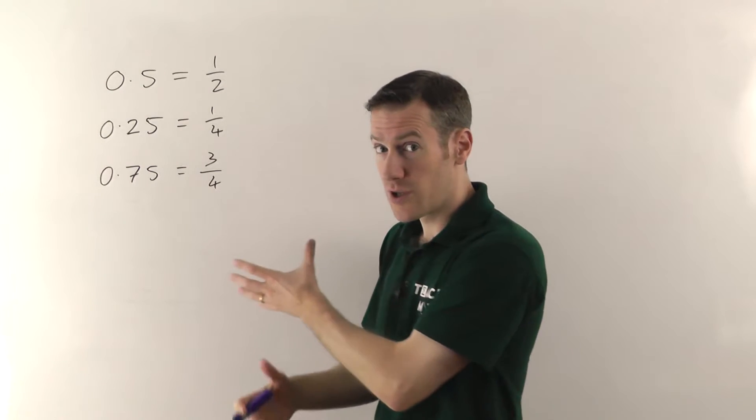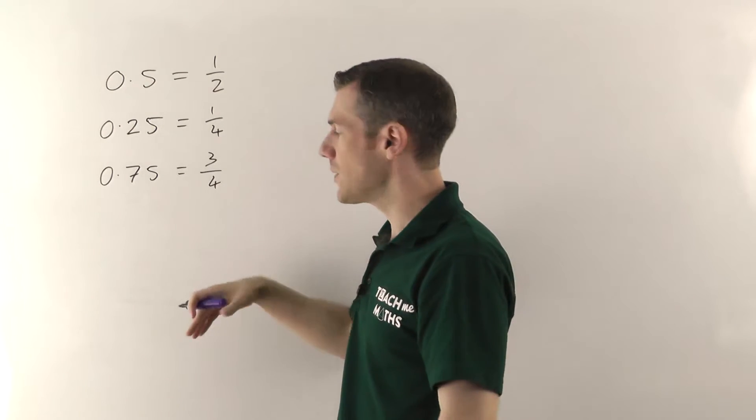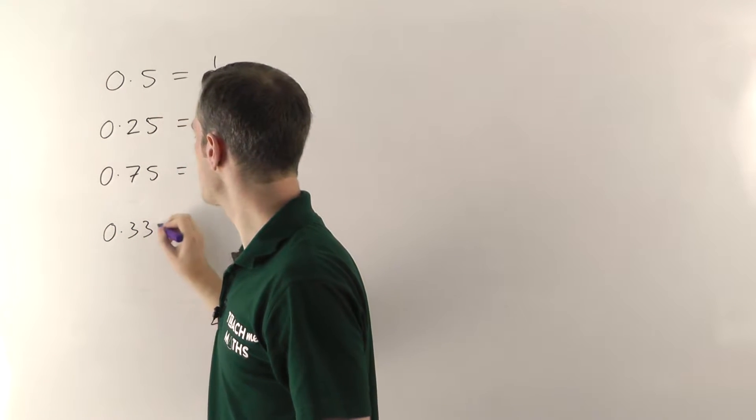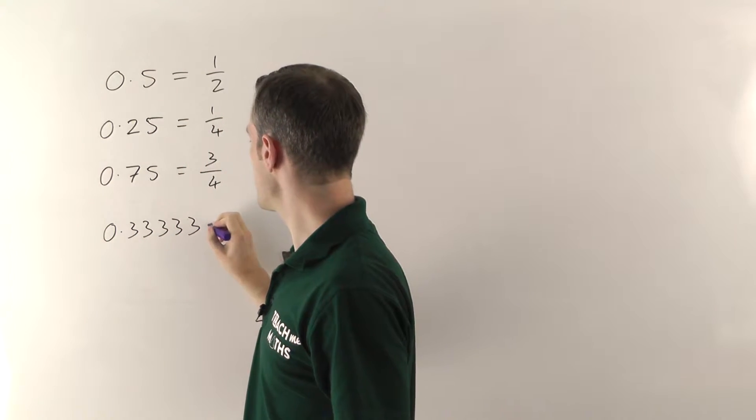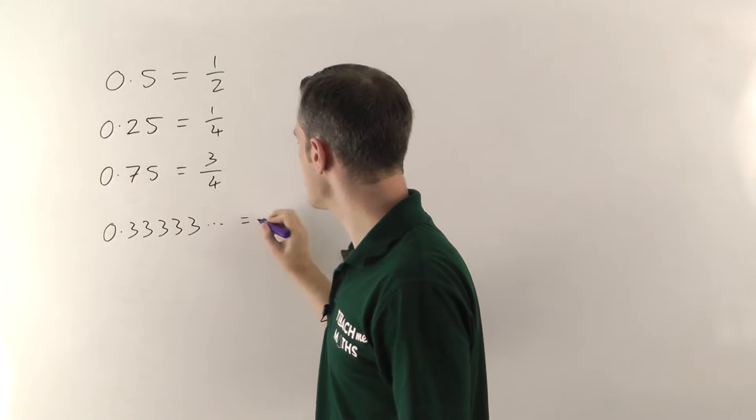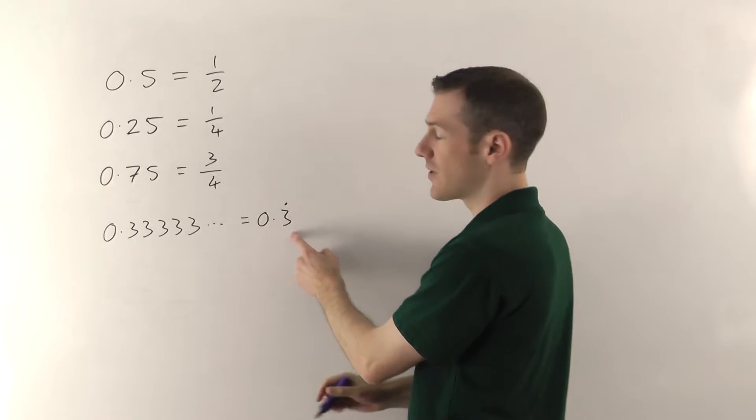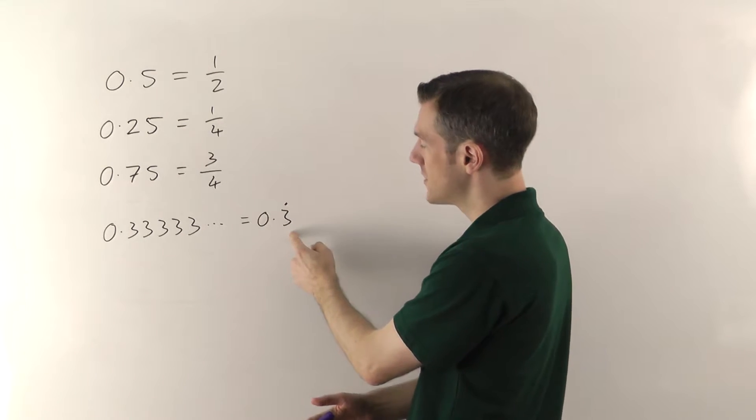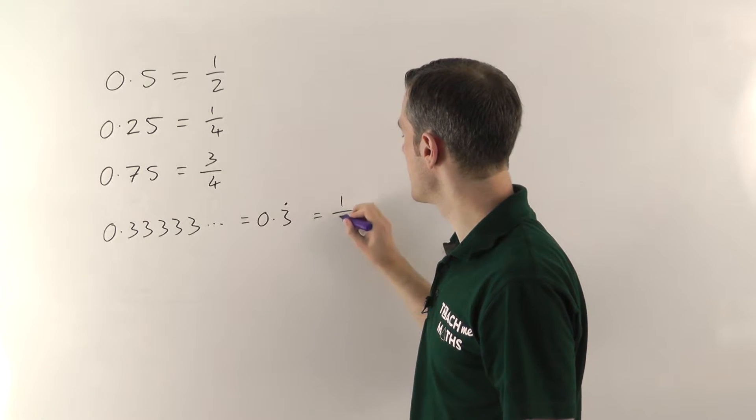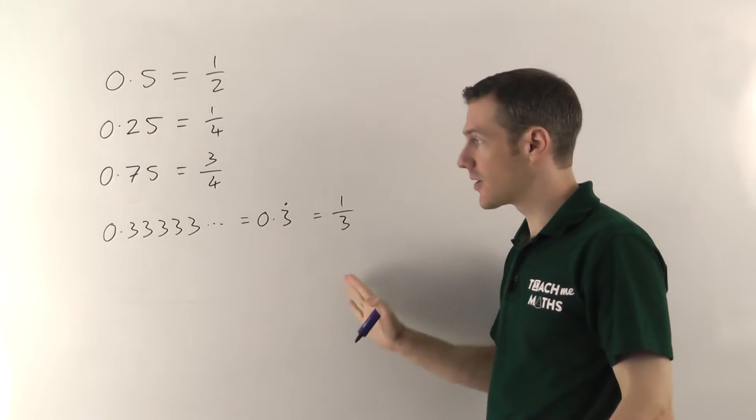There's a couple of other ones though that you should also know, partly because they're quite difficult to convert using any kind of method, but also because they come up quite a lot. So the first one is 0.3 recurring, we say, and that's where the 3's go on forever here. Sometimes you can write that as 0.3 with a dot above the 3, and as I say we call this 0.3 recurring. It means that the 3's just go on forever. And as a fraction, this is the same as a third. So you should learn that one. It's a very important one, it comes up very often.